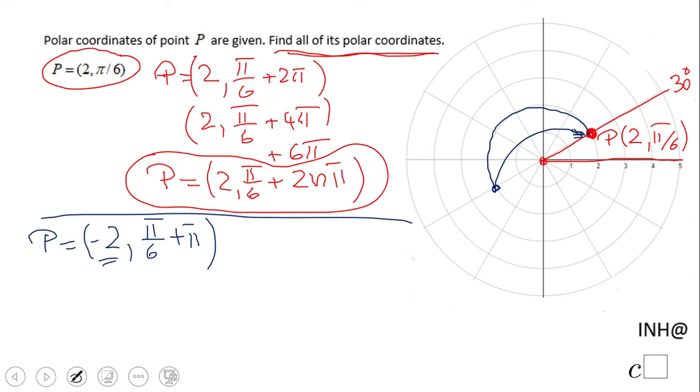Well, then the same idea, right? I can move one more time. We're going to have negative 2, π/6, and on that π I'm going to have another 2π, so it's going to be 3π. But then I can do it one more time: negative 2, π/6 plus 5π, and so on—7π, 9π.